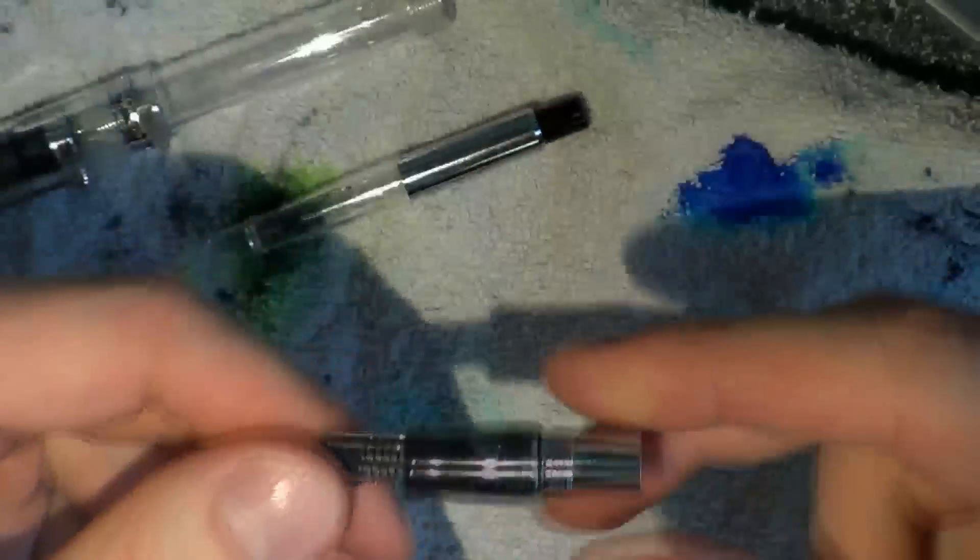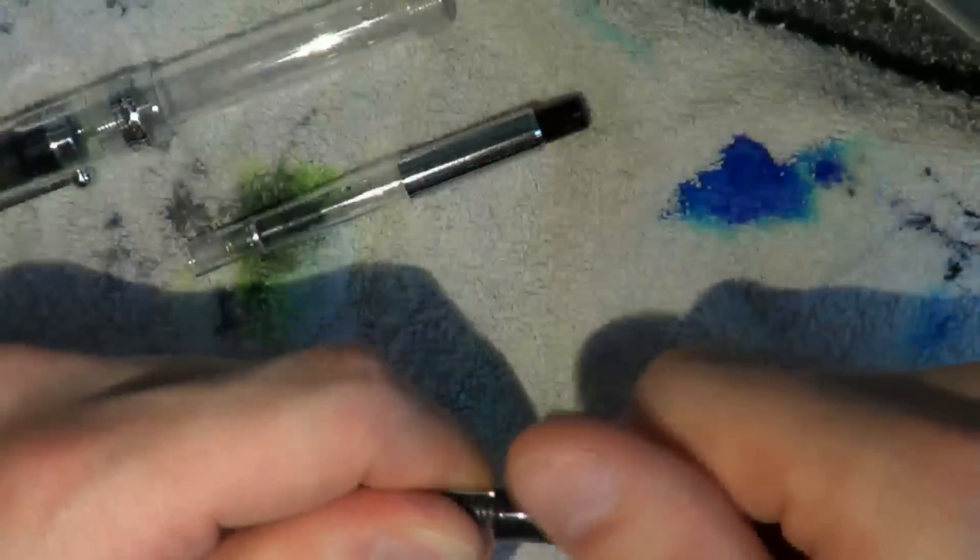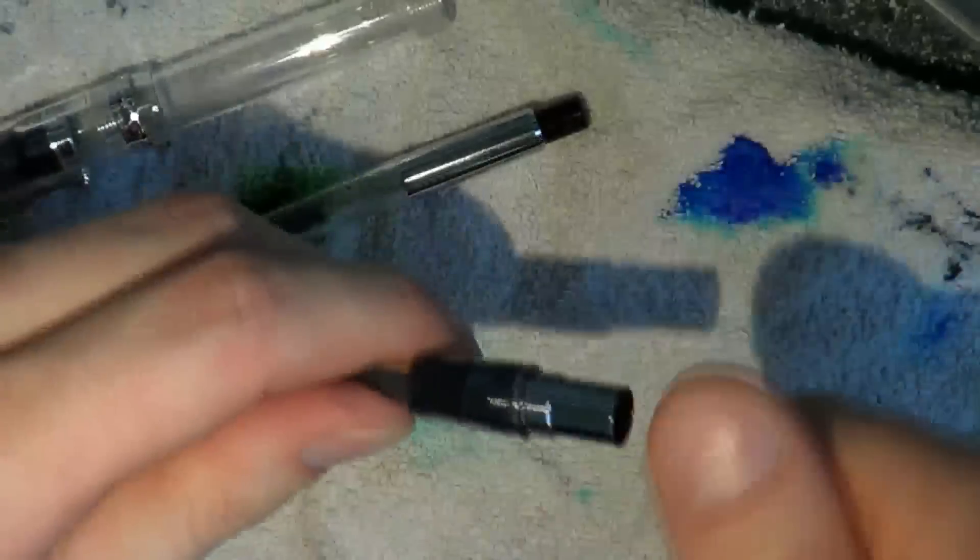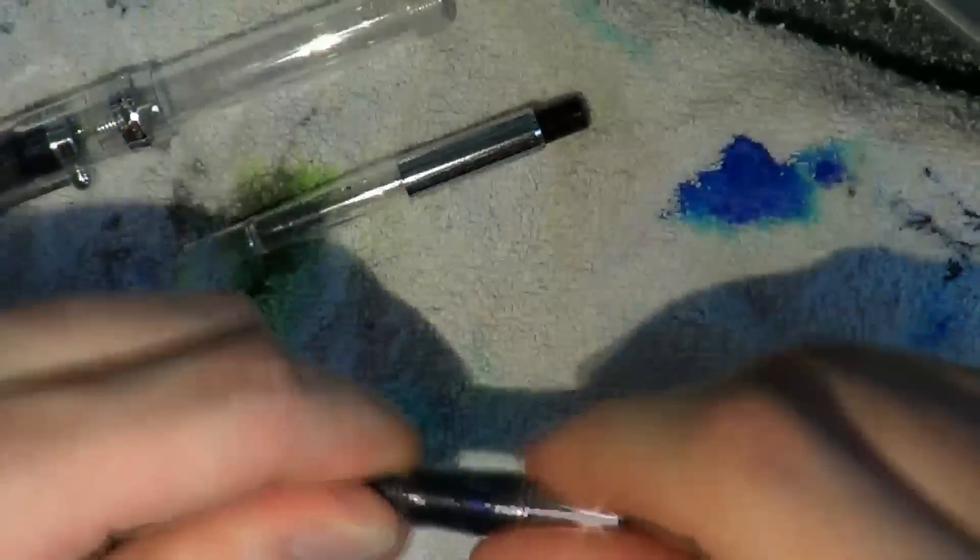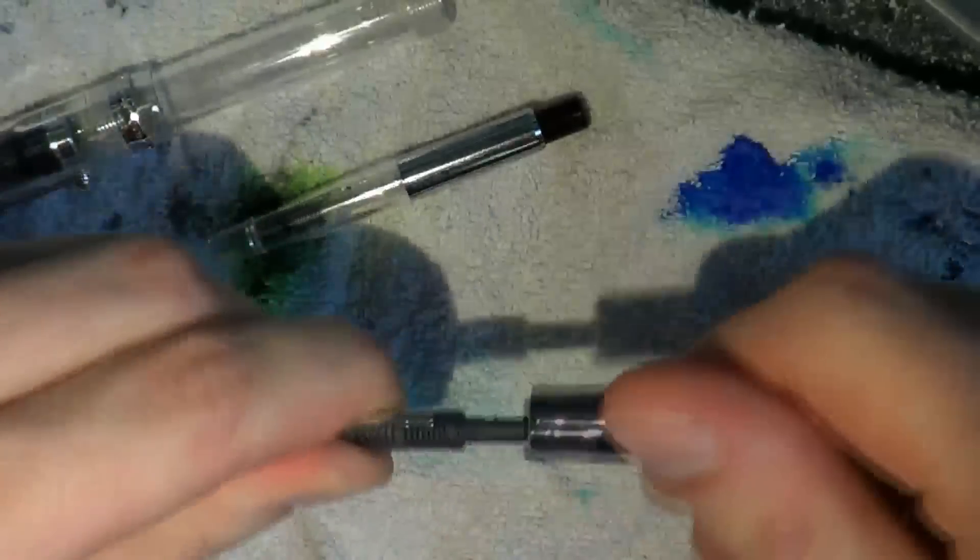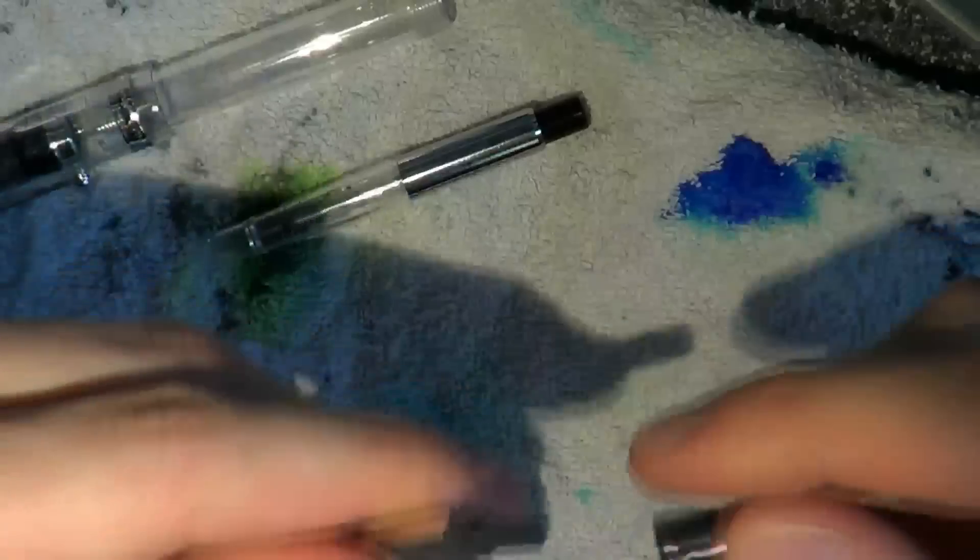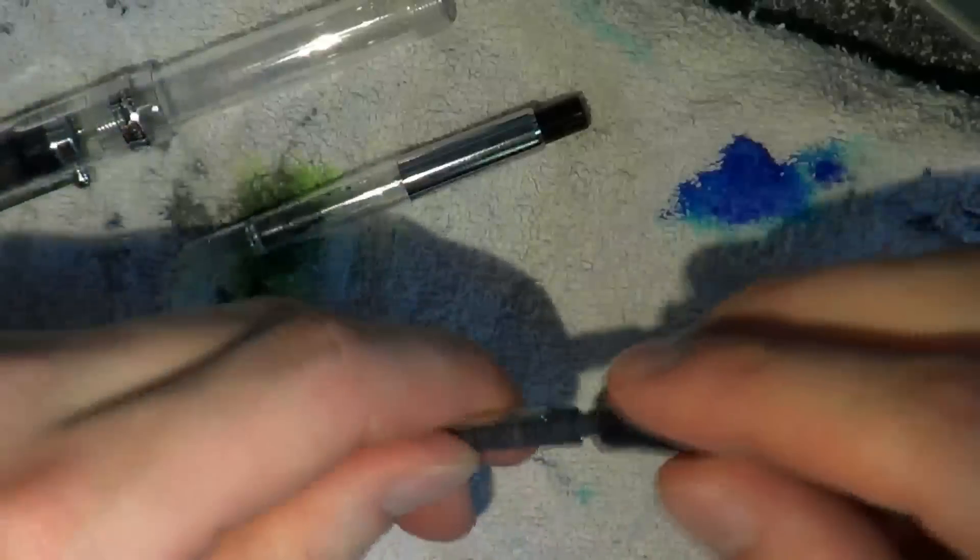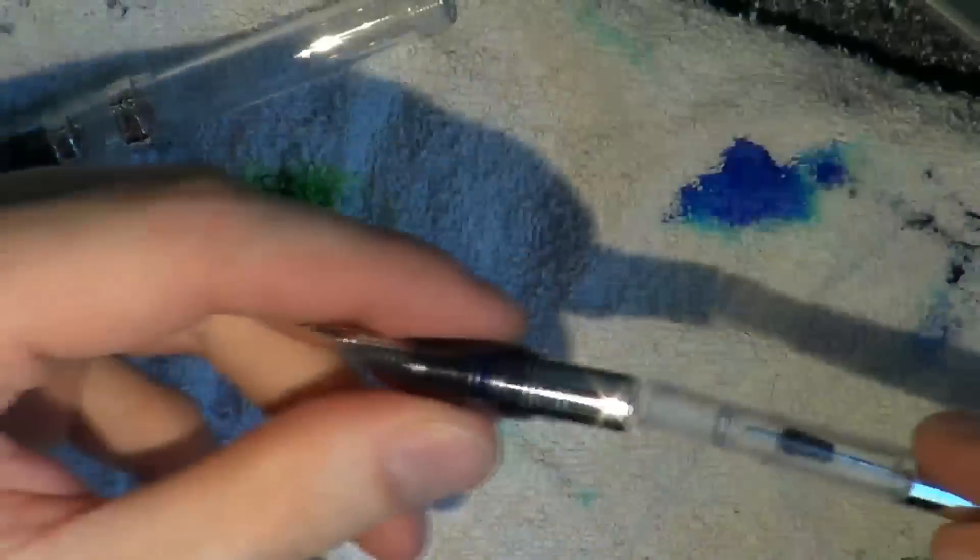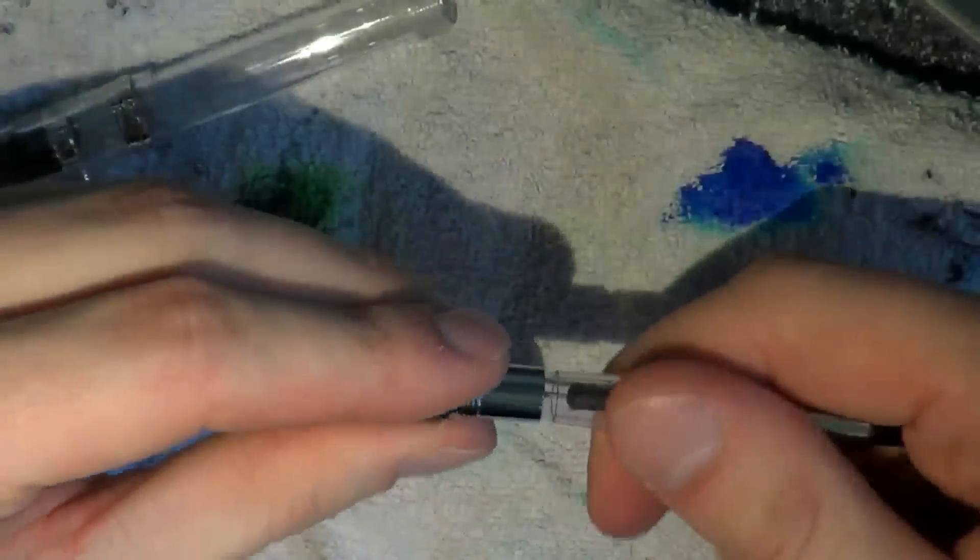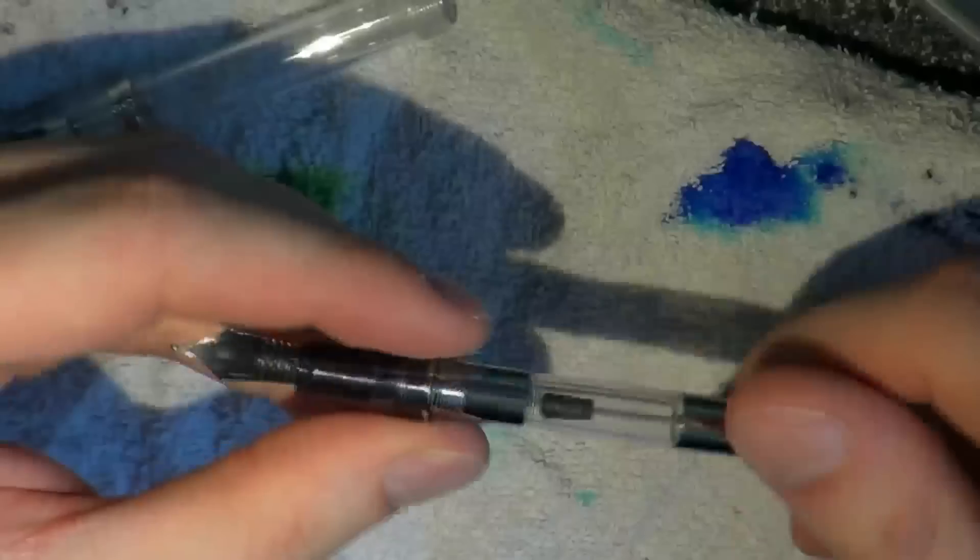Now when it comes to the section, this can be disassembled as well. But the thing is, usually you turn left to loosen something up. Problem here is nib and feed are friction fit. However, simple trick: put the converter in, turn it.